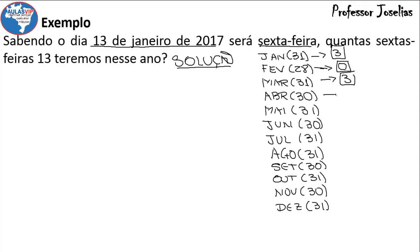De abril para maio: abril tem 30 dias, o resto da divisão de 30 por 7 é 2 — avança 2 dias na semana. Em maio tem 31 dias; dividindo por 7, o resto é 3 — de maio para junho, aquela data avança 3 dias. O resto da divisão de 30 por 7 é 2 — de junho para julho, aquela data avança 2 dias. E assim teremos esses avanços, dividindo os dias de cada mês por 7 e vendo o resto.